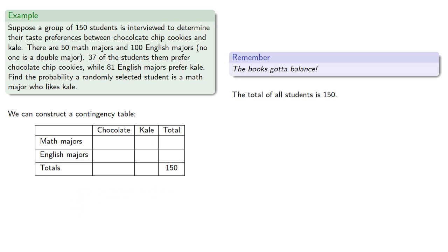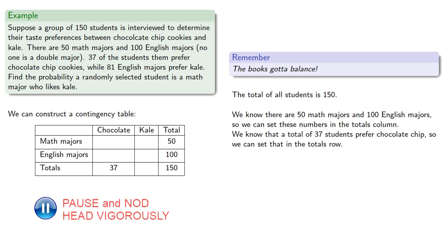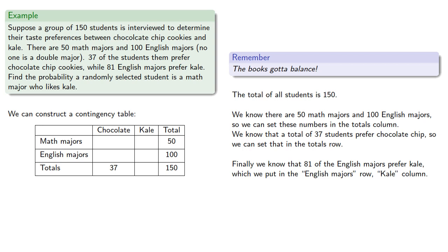We know there are 50 math majors and 100 English majors in total, so we can set these numbers in the totals column. We also know that a total of 37 students prefer chocolate chips, so we can set that in the totals row of chocolate. Finally, we know that 81 of the English majors prefer kale, which we put in the English majors row, kale column.